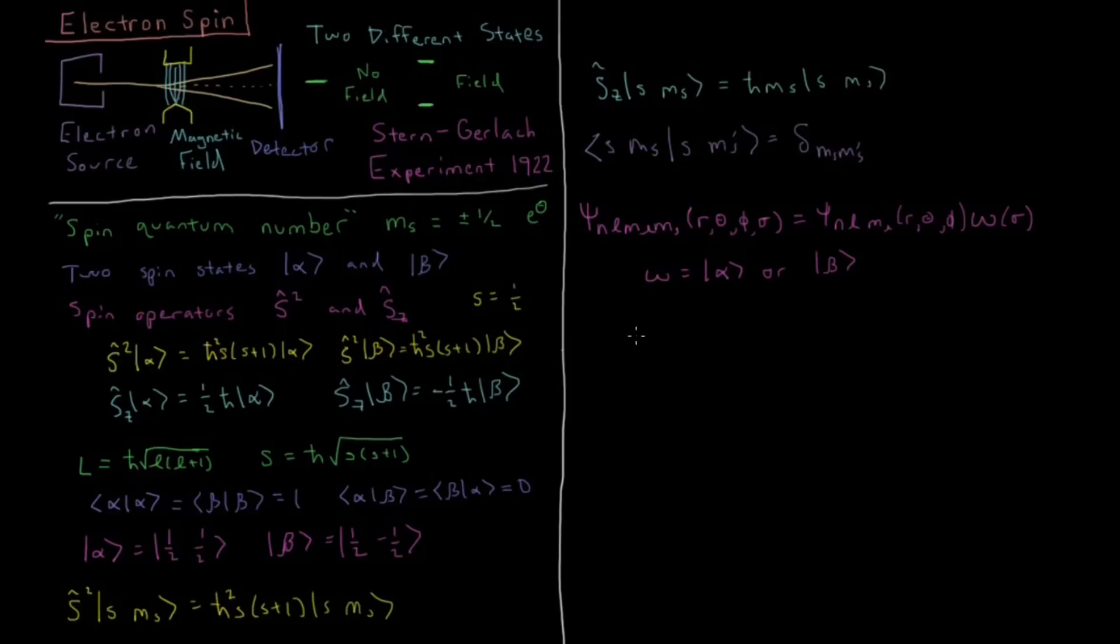So this entire ket here, if we have an entire ket with N L M sub L and M sub S, that would be referred to as a spin orbital. The type of orbital we had previously where we would have had just N L and M sub L without spin, that would be referred to as a spatial orbital, so just a function of space, whereas a spin orbital is a function of the three spatial coordinates and also the spin coordinate sigma.